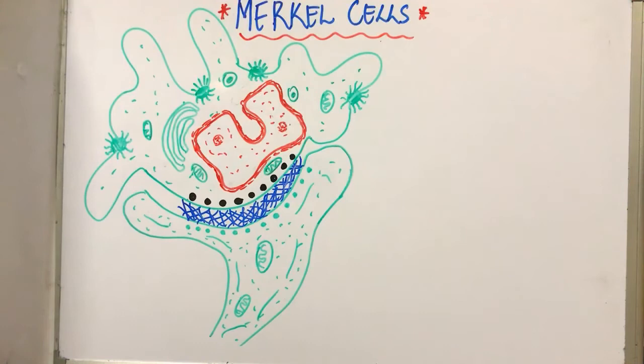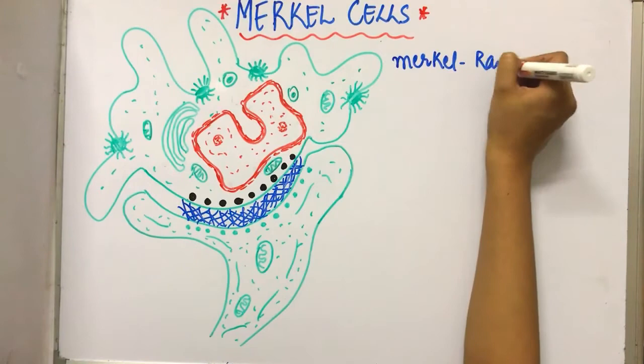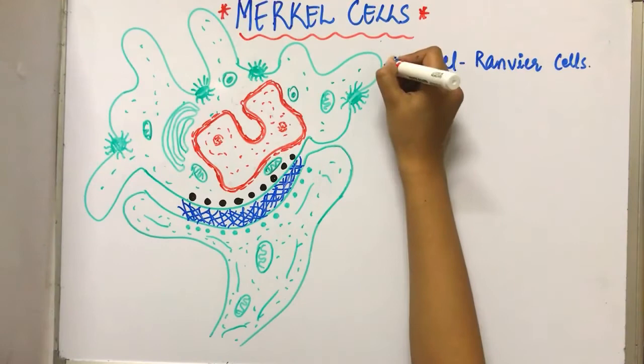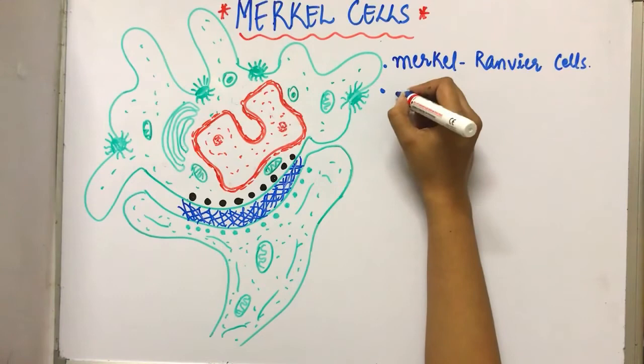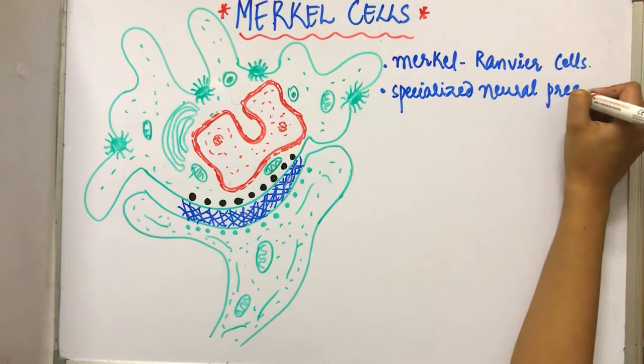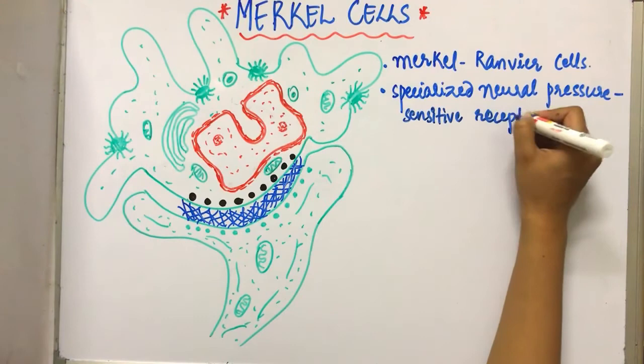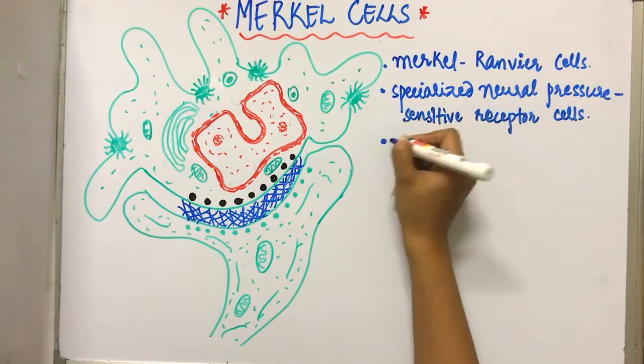There are various synonyms of these cells. First of all, these are the Merkle-Ranvier cells. Next, these are also known as specialized neural pressure sensitive receptor cells. Next, these are the non-dendritic cells.